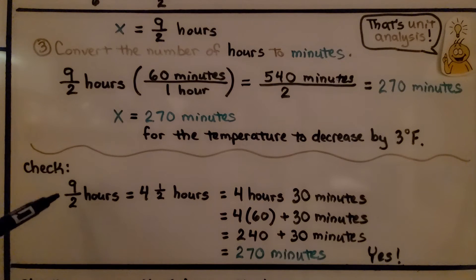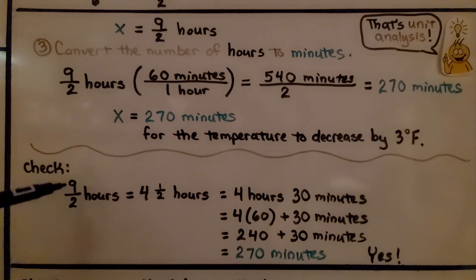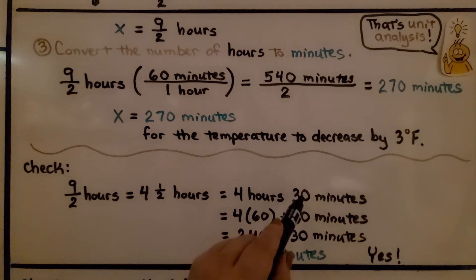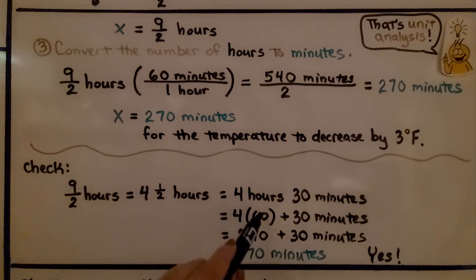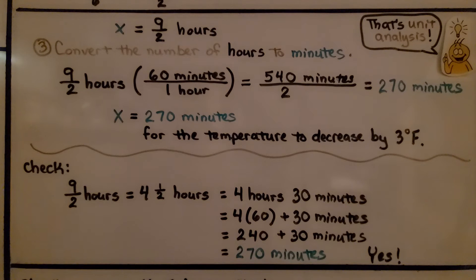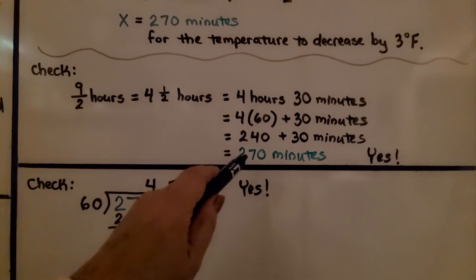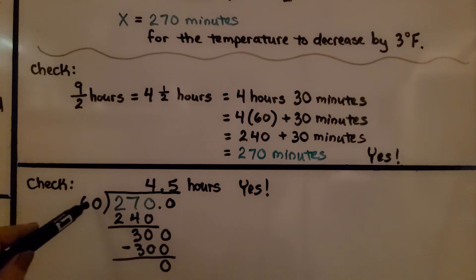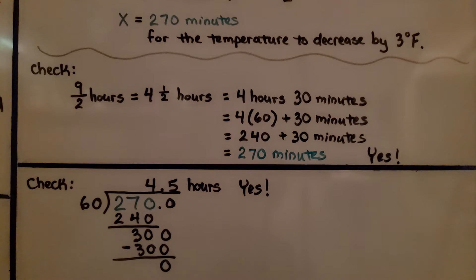We can check: 9 halves hours equals 4 and a half hours. 4 and a half hours is 4 hours 30 minutes, because 30 minutes is a half hour. 4 hours times 60 minutes is 240 minutes, plus 30 minutes is 270 minutes — correct. We can also verify by dividing 270 by 60 using long division, which gives 4.5 hours. Yes, we did it correctly.